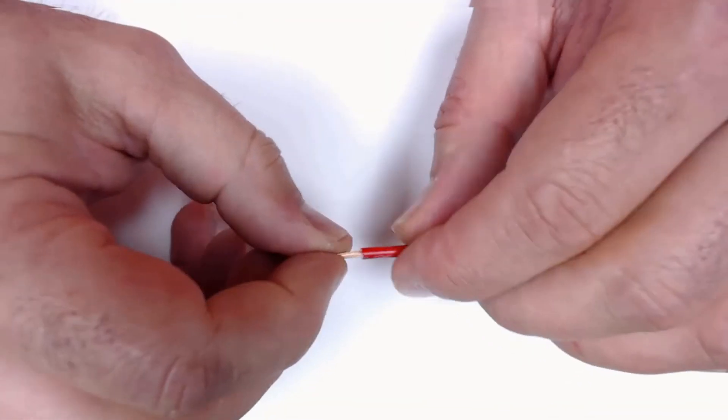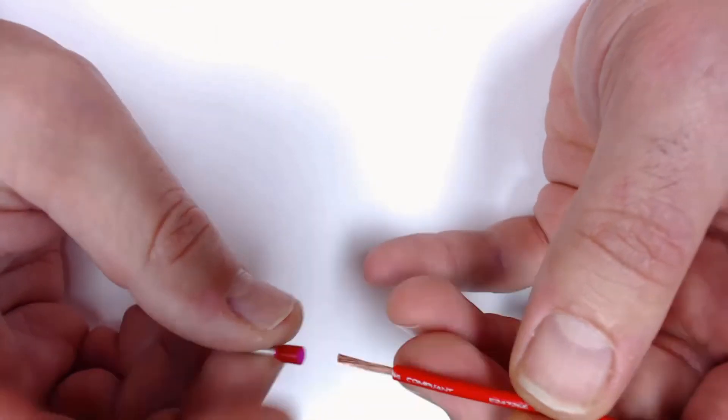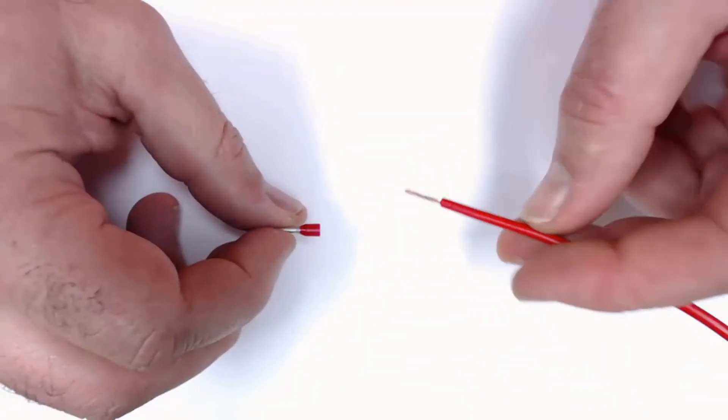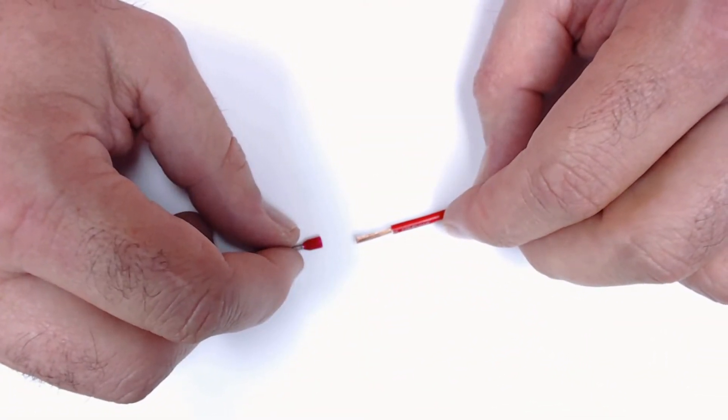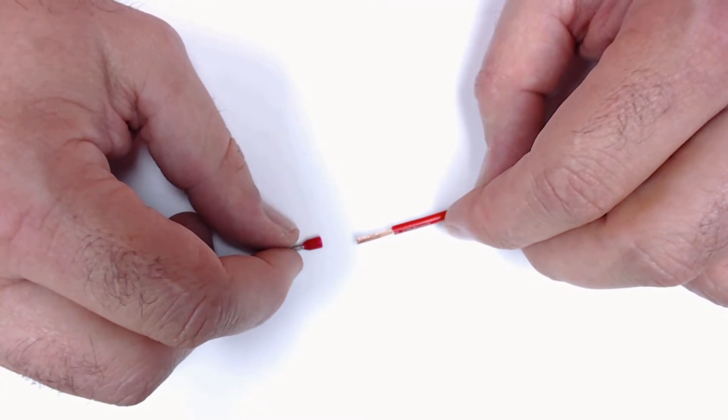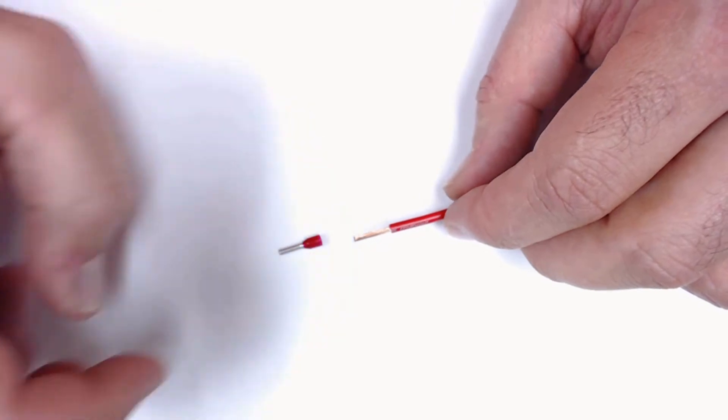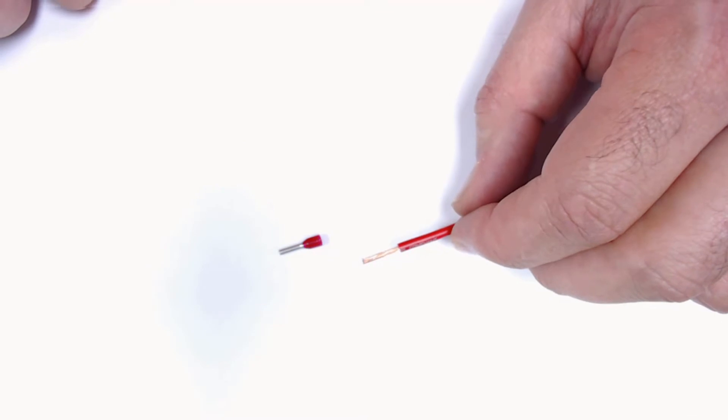We get questions about the 16-gauge rating on the Weidmuller connectors. Some teams and customers seem to struggle with 16-gauge wire inserting into the Weidmuller connectors on our products. They can be difficult. It just depends on the brand of wire you're using. Not all 16-gauge wires are created equally.